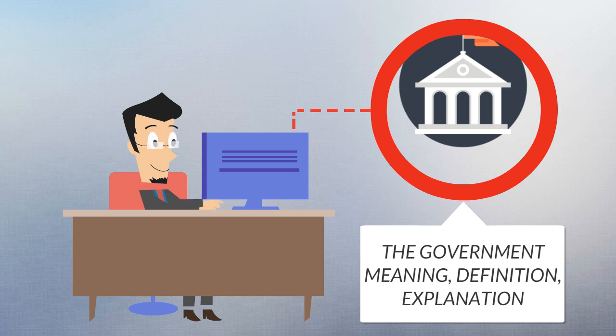While all types of organizations have governance, the word government is often used more specifically to refer to the approximately 200 independent national governments on earth, as well as their subsidiary organizations.